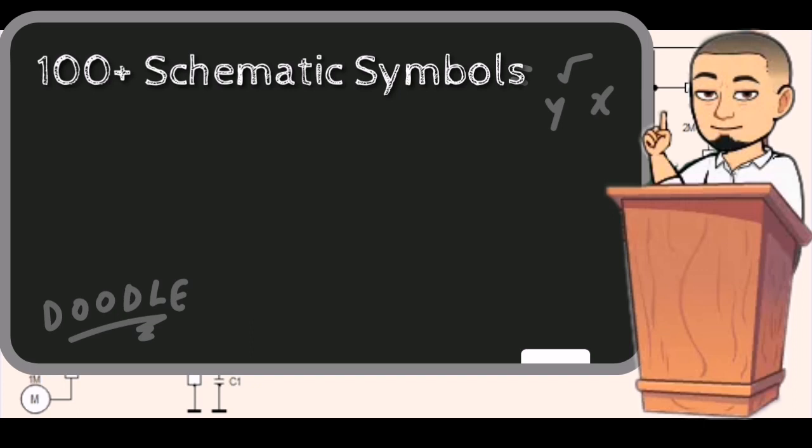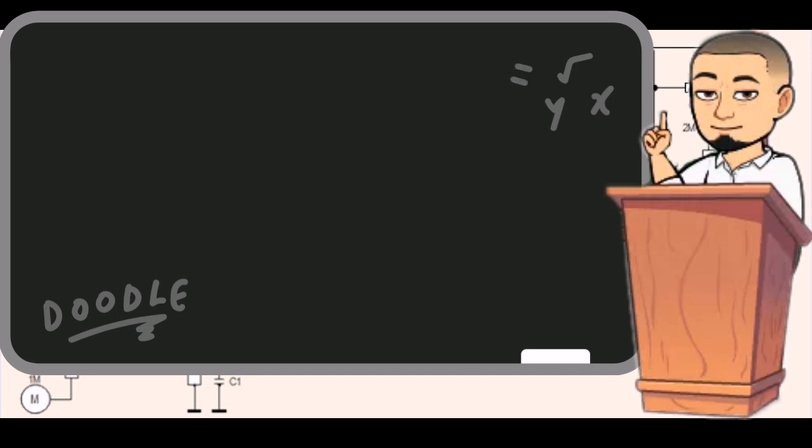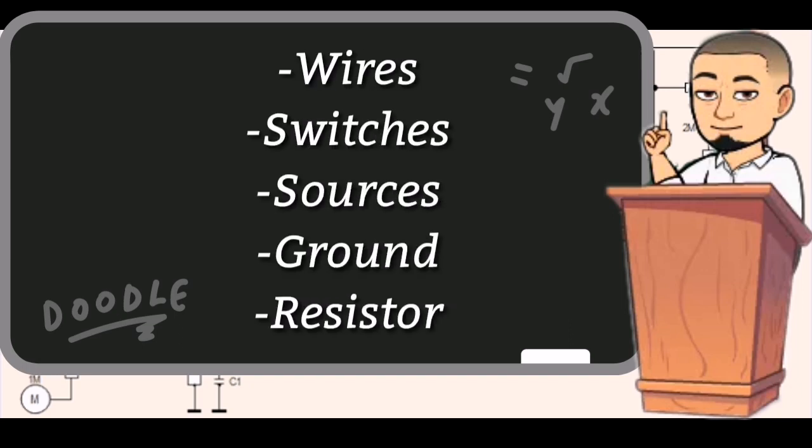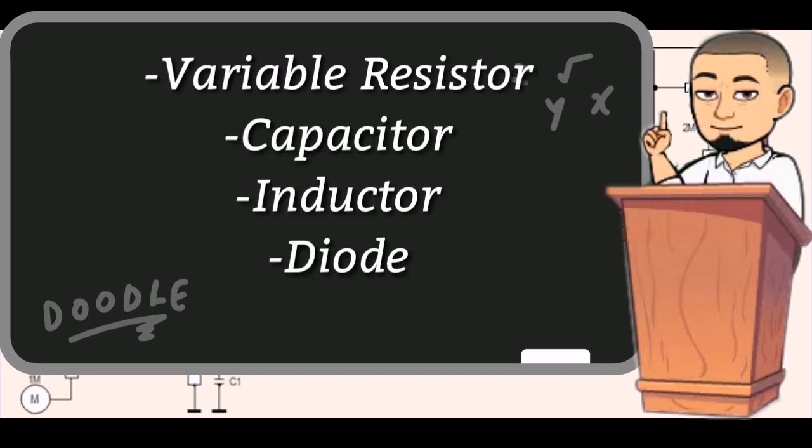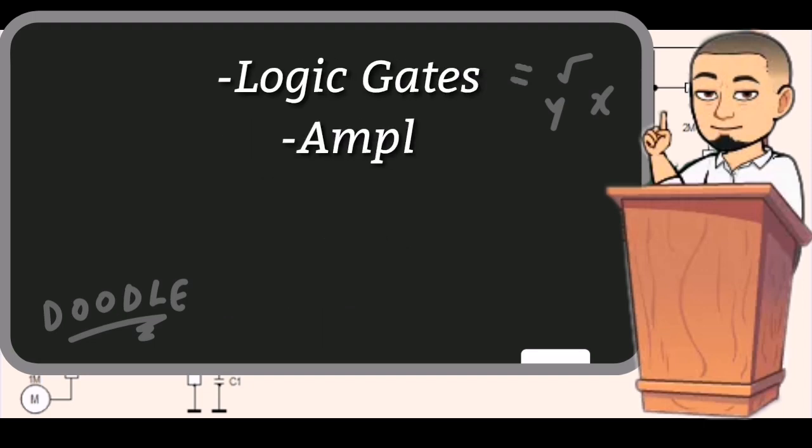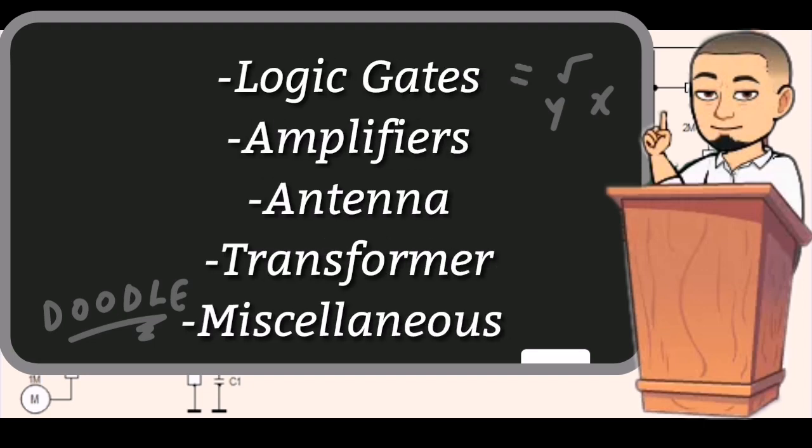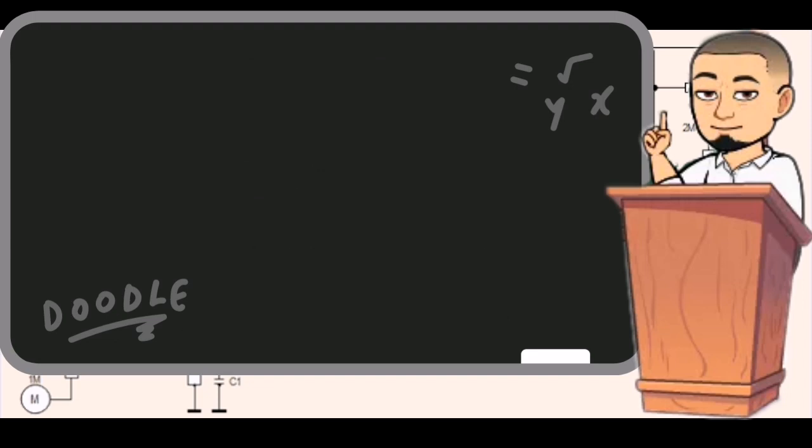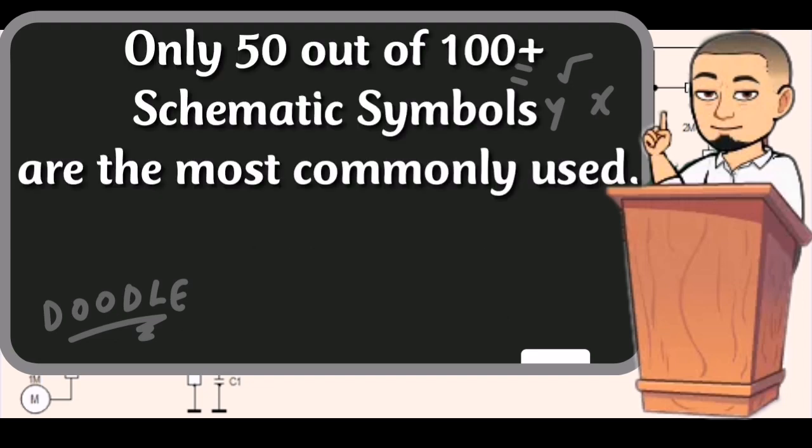There are 100 plus schematic symbols that we can use. They fall under 15 categories, which are wires, switches, sources, ground, resistor, variable resistor, capacitor, inductors, diodes, transistor, logic gates, amplifiers, antenna, transformer, and miscellaneous, but only 50 of them are the most commonly used symbols.